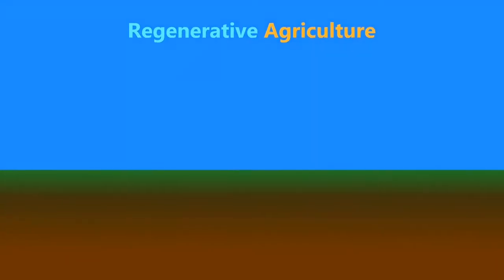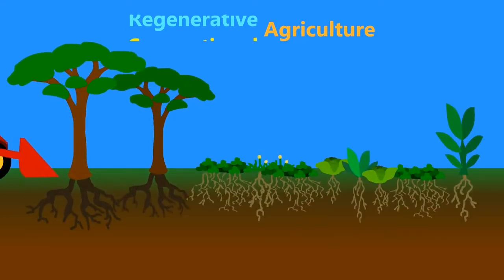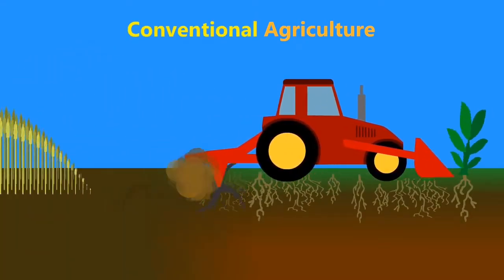Regenerative agriculture is a set of farming practices that increase biodiversity and soil organic matter. Currently, most agricultural practices are devastating to biodiversity.